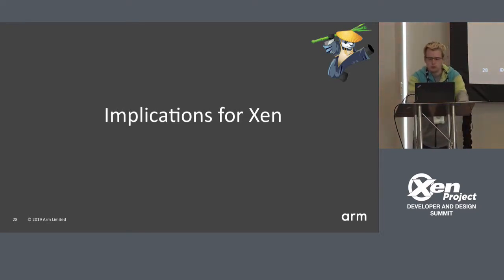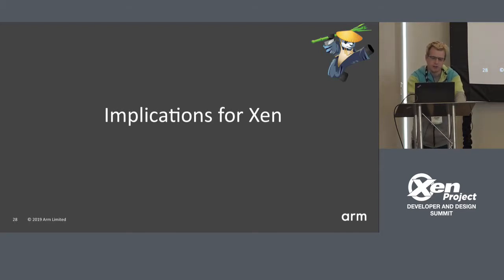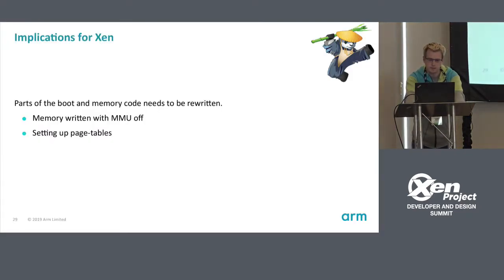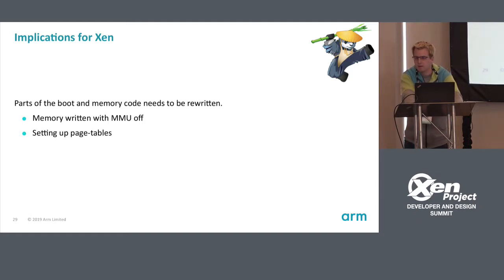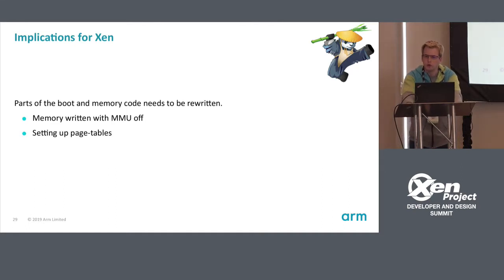That gives you an idea of the ARM architecture at a really high level — I could probably go on for four hours explaining every single part. I'm trying to show how tricky this is to handle. To be blunt: mostly all the boot code and memory code in Xen on ARM is not compliant with the ARM ARM. We've already seen examples like on ThunderX where it doesn't boot with some configurations and you don't know why. There are two parts to fix: first, memory writing with the MMU off (page tables, BSS); second, setting up the page tables.